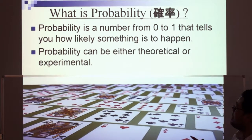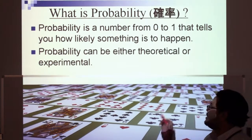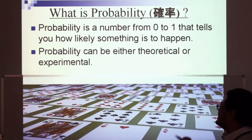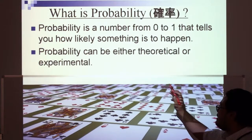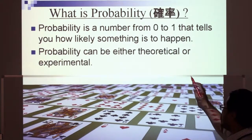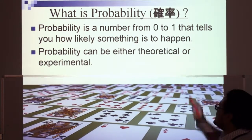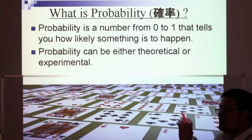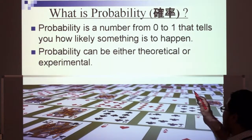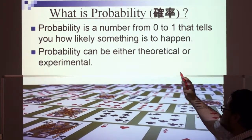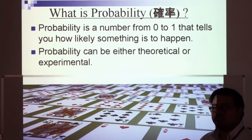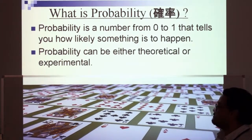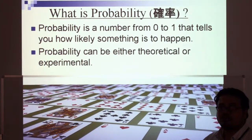What is probability? Probability is a number from 0 to 1 that tells you how likely something is to happen. Probability can be either theoretical or experimental. Let's move on to that.